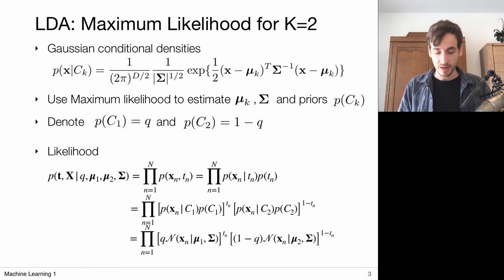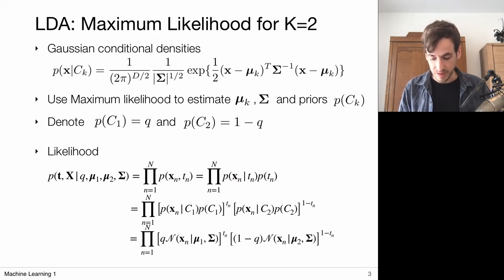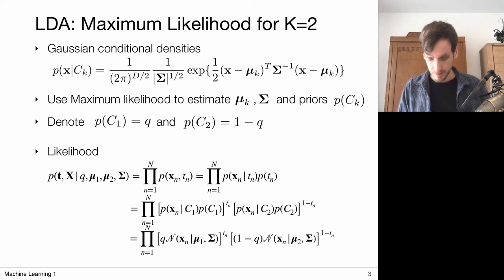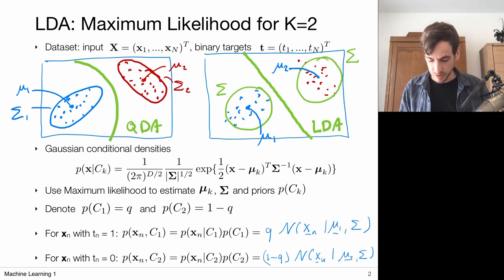The likelihood is given by the joint likelihood of all data points, which we assume to be IID — they all come from the same distribution modeled by the product of the conditional and the prior. The likelihood is obtained by evaluating x_n and t_n in our prior and conditionals and taking the product over all data points. For t=1 this gives the joint for class 1, and for t=0 this gives the joint for class 2.